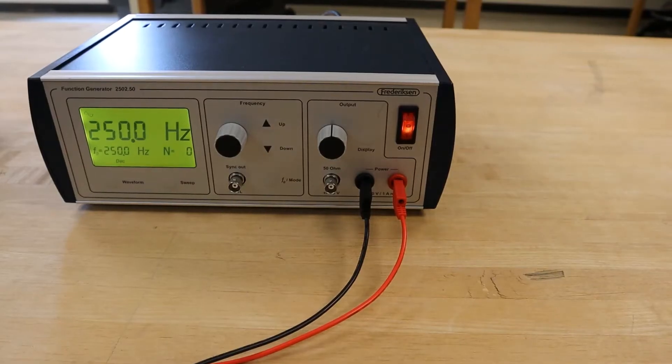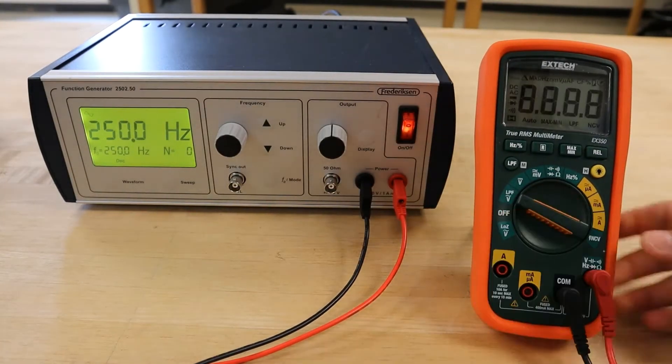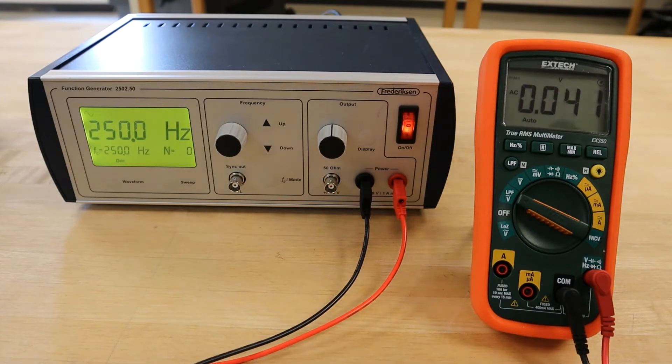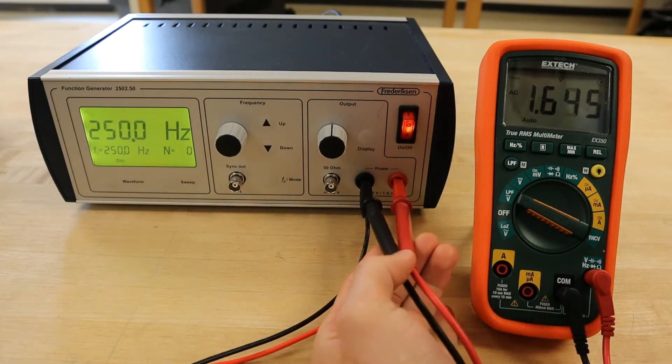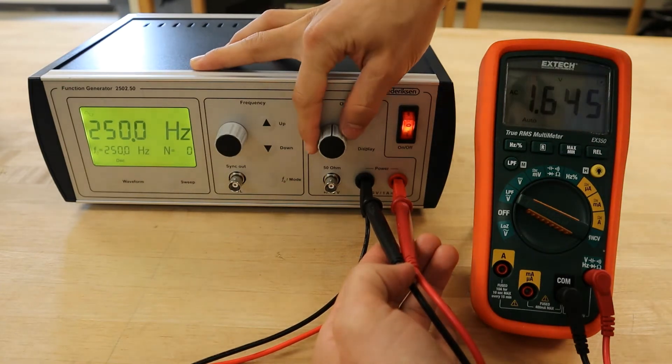With our DMM set to measure AC voltage, we will set the amplitude of the function generator such that the DMM measures 3 volts, but remember that this is an RMS value.